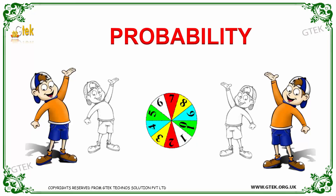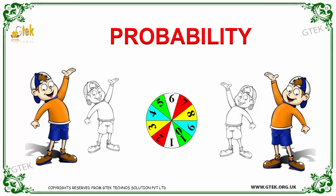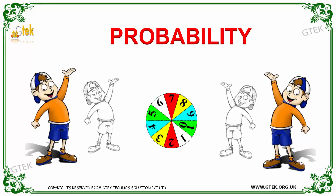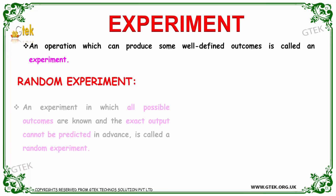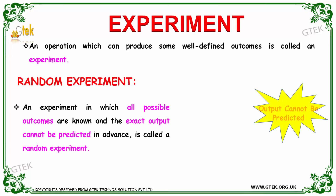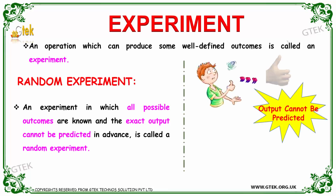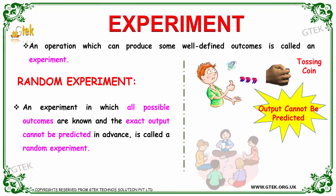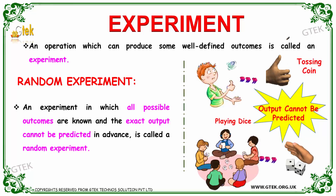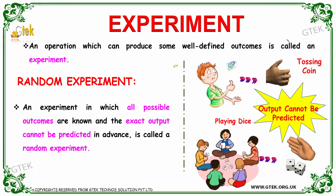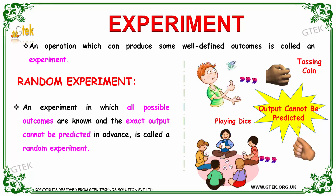Hello, welcome to G2 Company. We are looking into probability. What do you mean by probability? An operation which can produce a well-defined outcome is called an experiment. Whereas, if we are not able to predict what could be the output, then it's the probability.